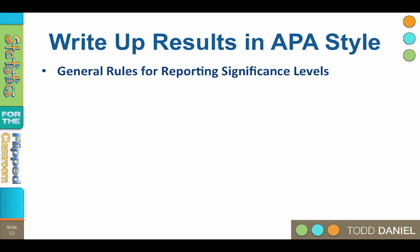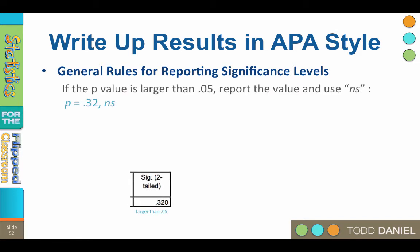Here are the general rules for reporting probability statistics. Look at the value in the SIG box. This is a probability value, also known as a p-value. It represents the probability of finding the results of your test if the null hypothesis is true.